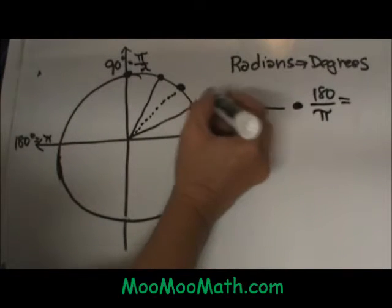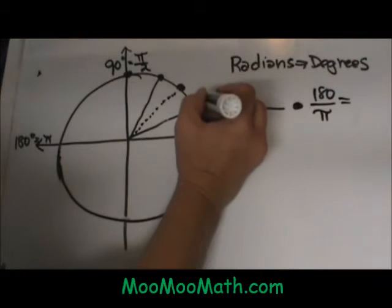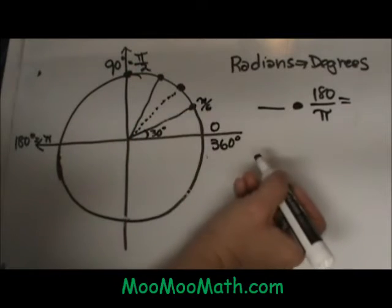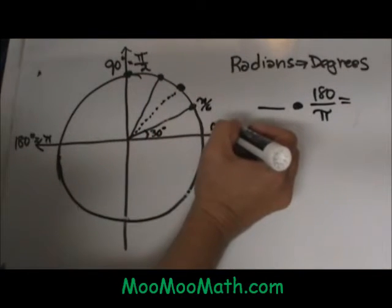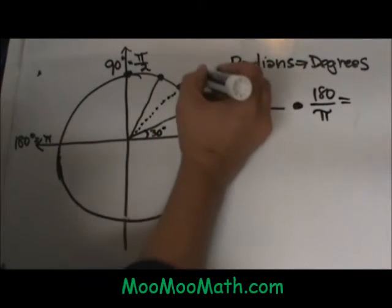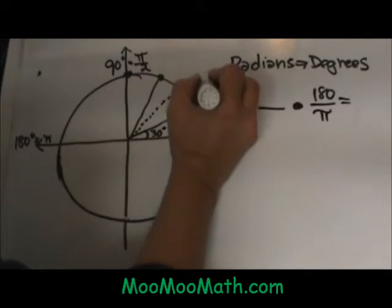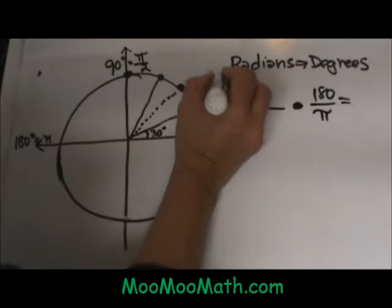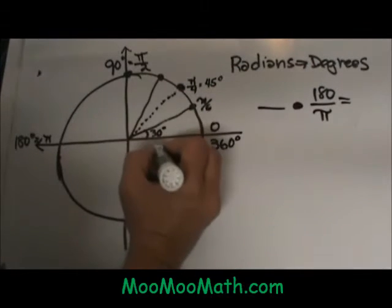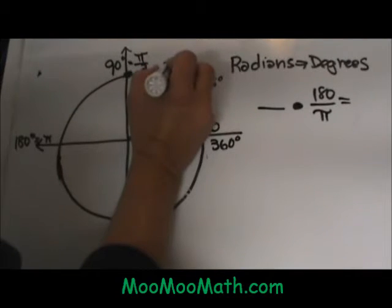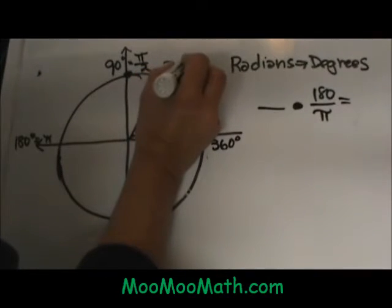The radians, this first point, is going to be π/6, which is also 30 degrees. The second step up here is going to be π/4, which is equal to 45 degrees. The third step is π/3, which is equal to 60 degrees.